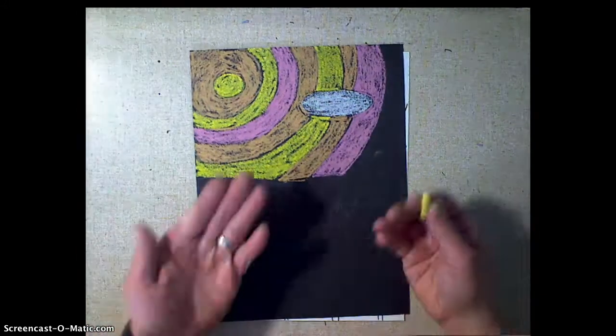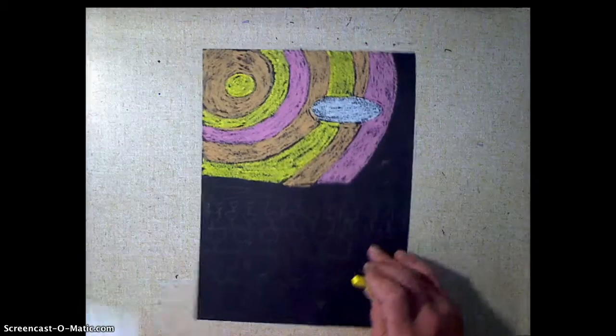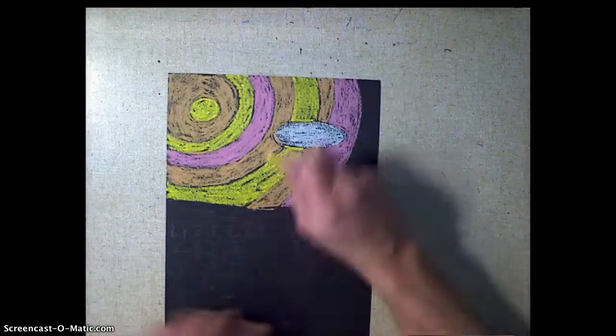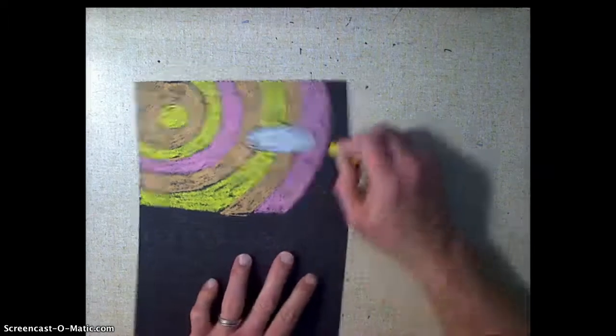Because if you work at the bottom, this stuff is kind of messy so it gets all over your hands. So you definitely want to work from the top down so you're not dragging your hand up and down through. And you can see where I've smudged by accident.